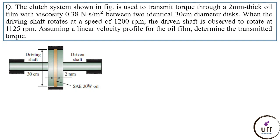The second problem: a clutch system is used to transmit torque through a 2 mm thick oil film with viscosity 0.38 N·s/m² between two identical 30 cm diameter discs. The driving shaft rotates at 1200 rpm and the driven shaft rotates at 1125 rpm. Assuming a linear velocity profile for the oil film, determine the transmitted torque.